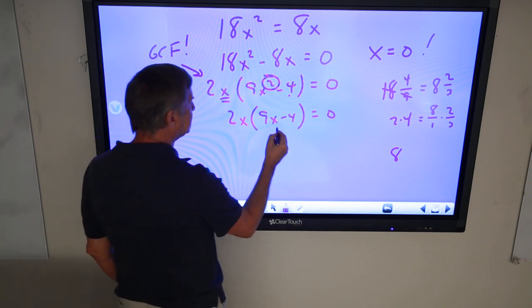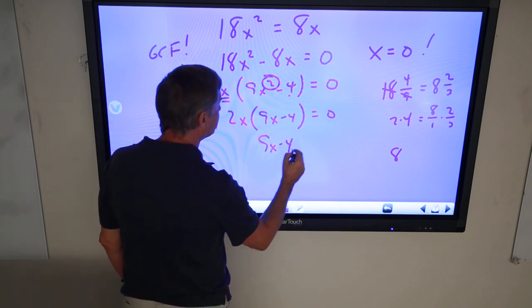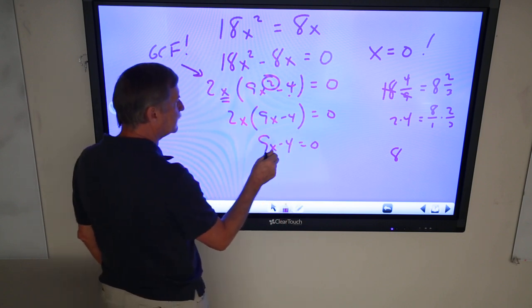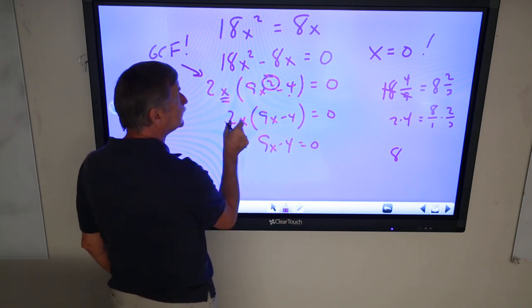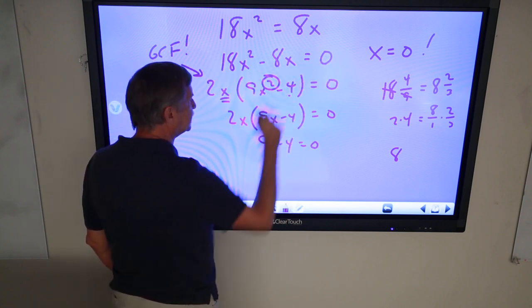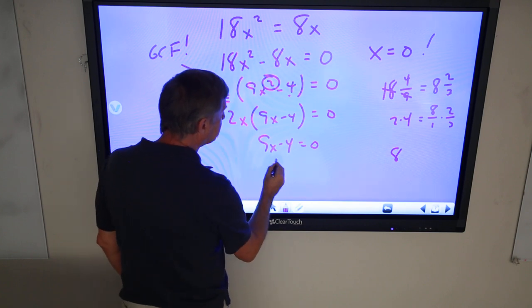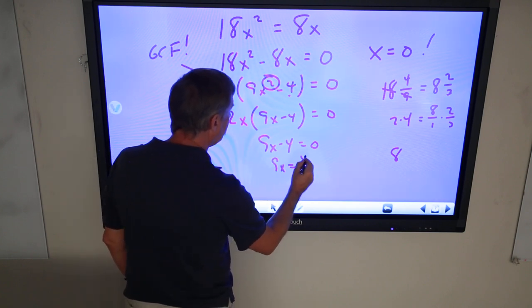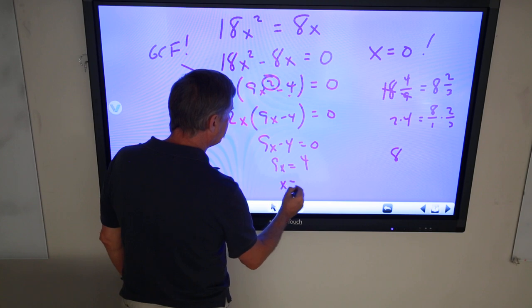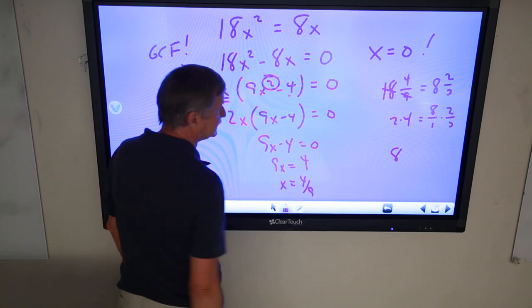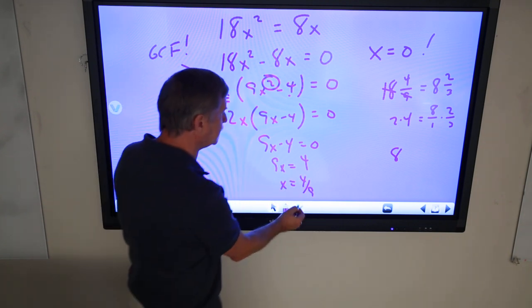In which case, I set this equal to 0, 9x minus 4 equals 0, because that's a factor. This we know already equals 0, x equals 0. And now, I see 9x equals 4, x equals 4/9 as a possible second answer.